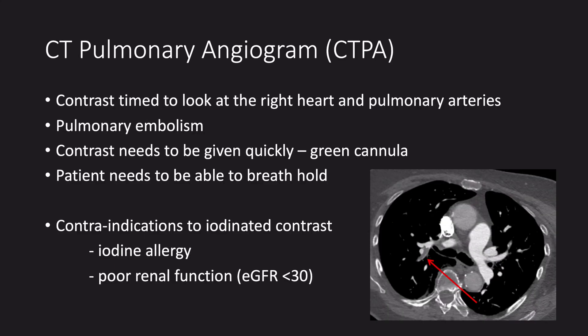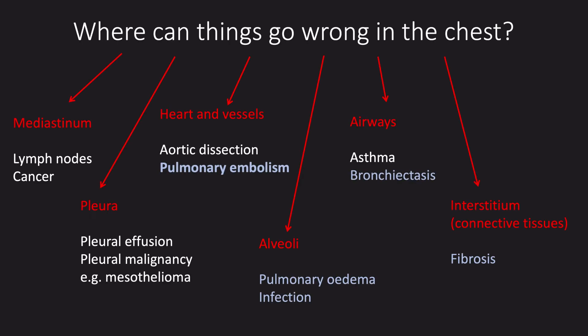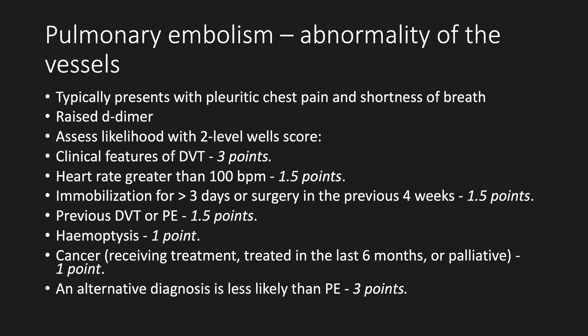A CT pulmonary angiogram is timed to look at the pulmonary arteries. There are two main contraindications: the first is a contrast allergy where the patient is allergic to iodine, and the other is poor renal function. The patient also needs to be able to hold their breath. A CTPA is probably the most common type of CT scan we do and one you will be requesting frequently as junior doctors, so we will concentrate on it.